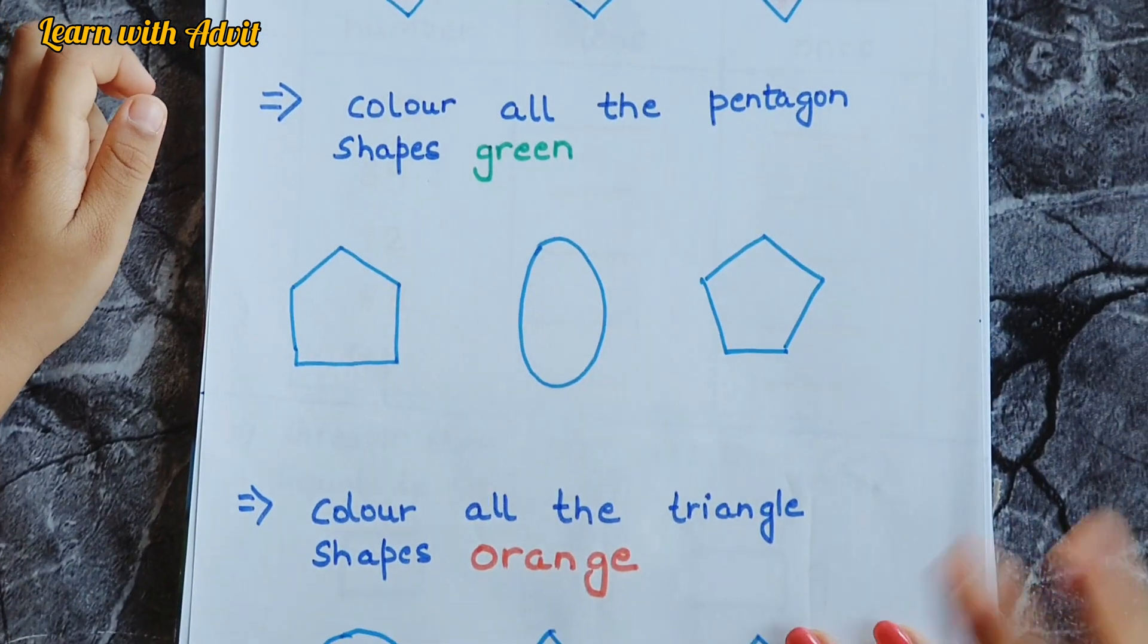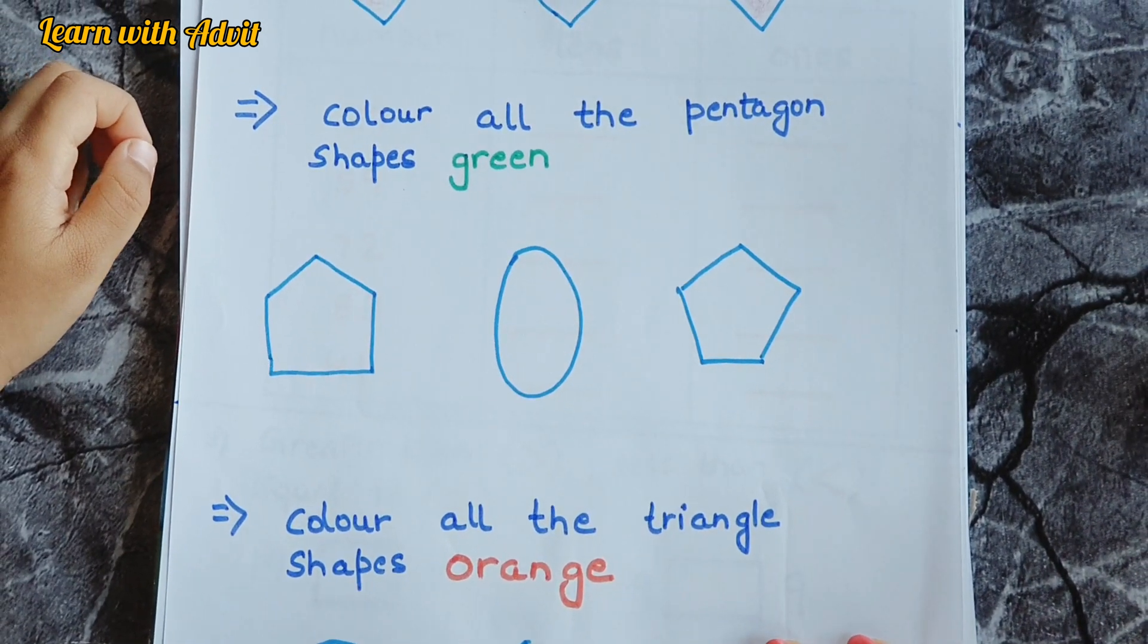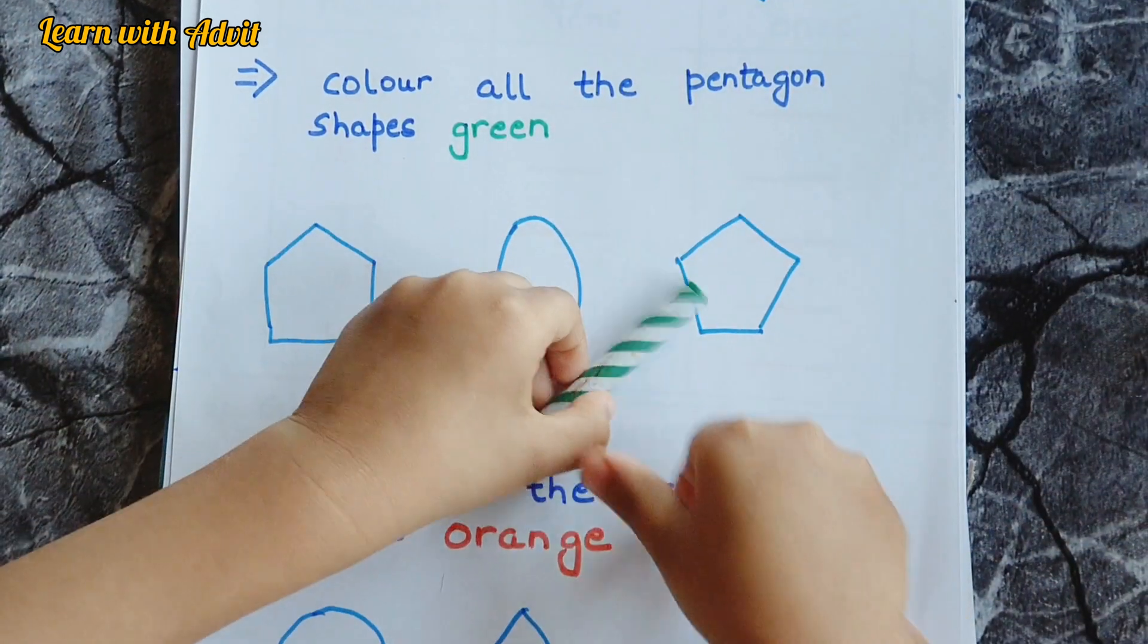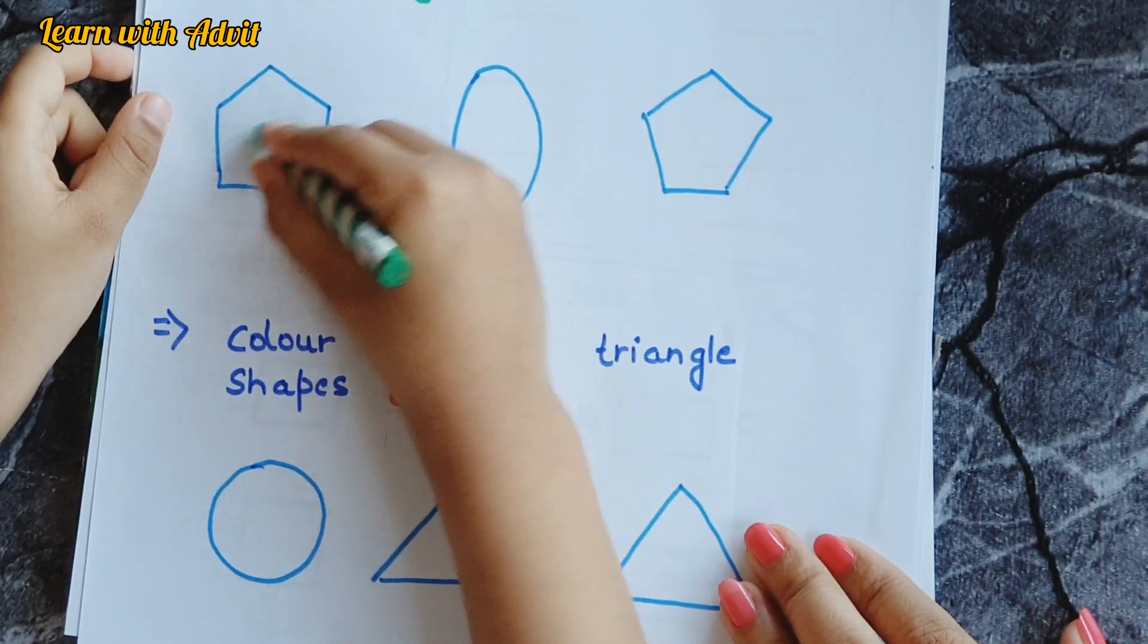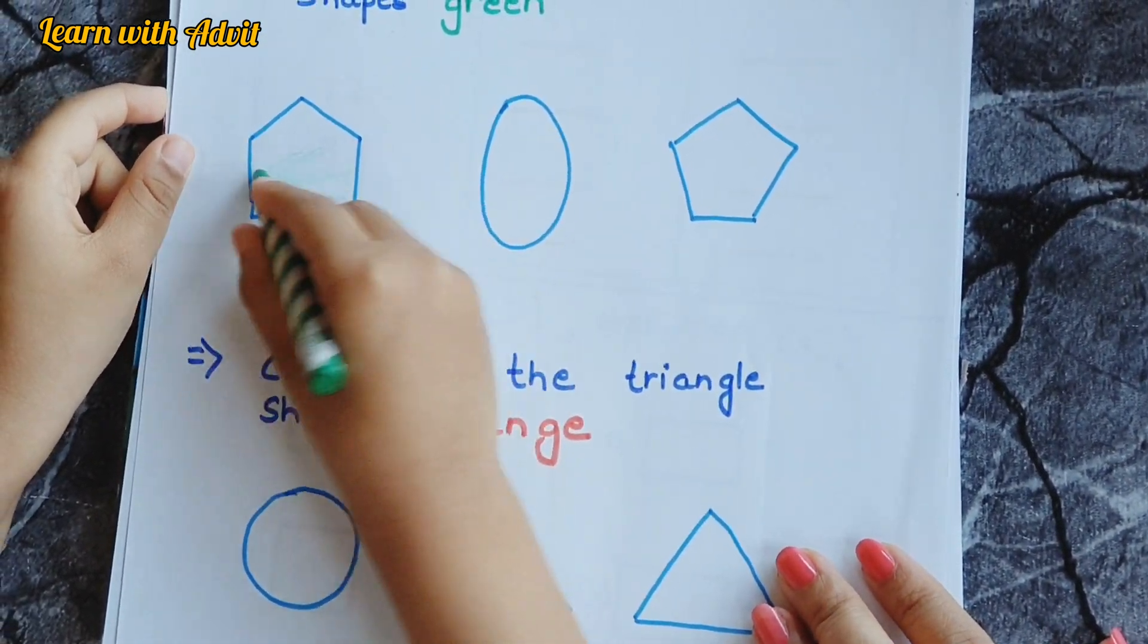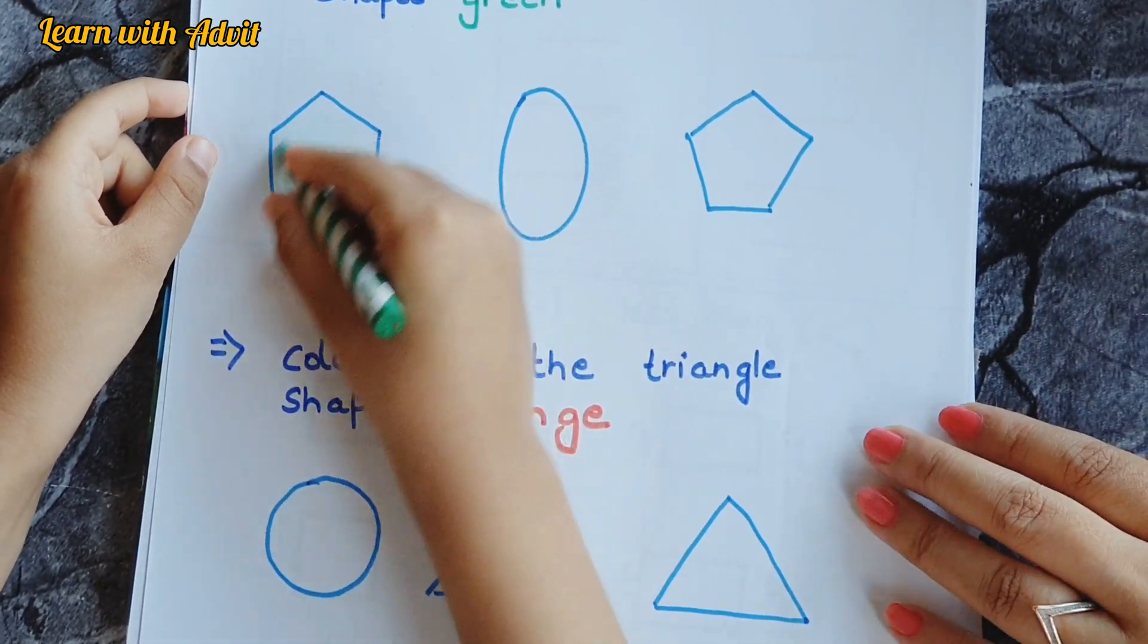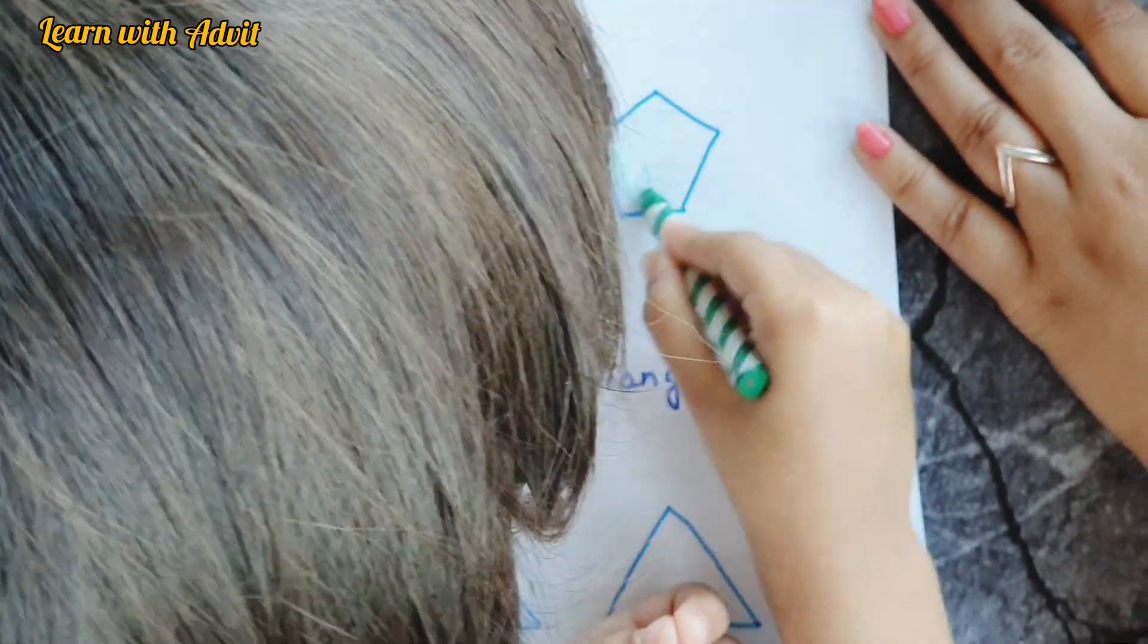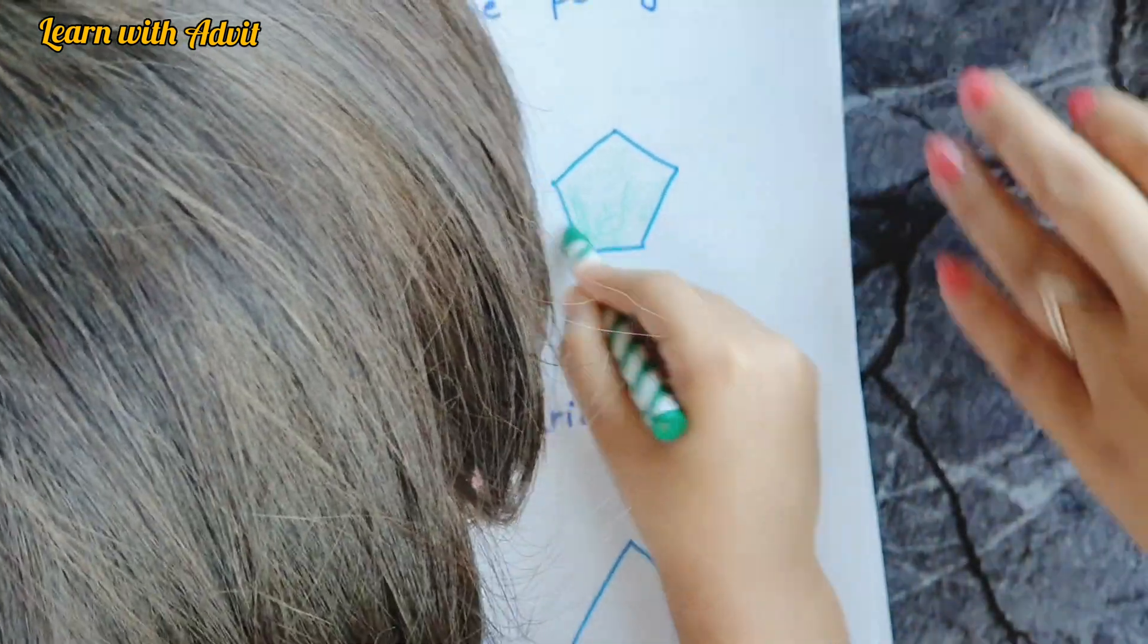So the next shape is, color all the pentagon shapes green. Do it. Now for the other pentagon. I hope you like these worksheets.